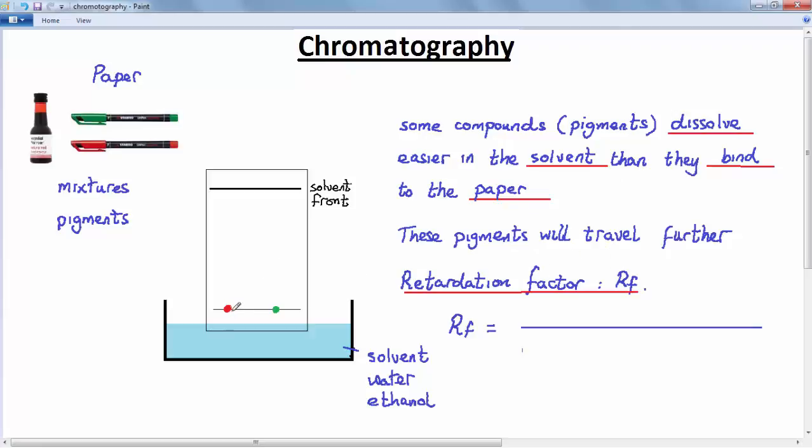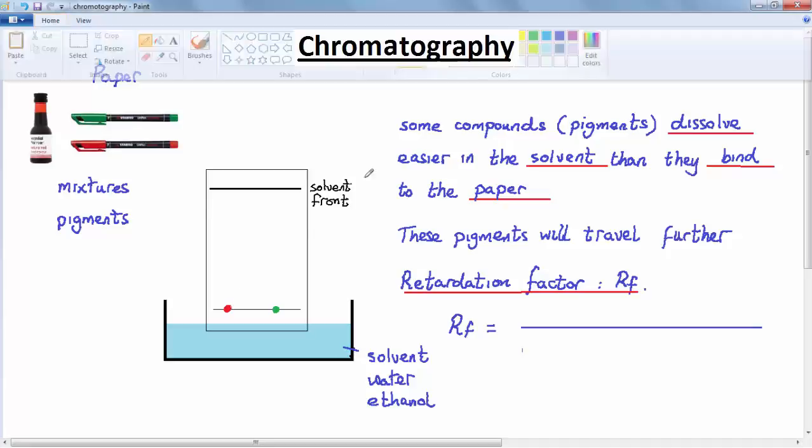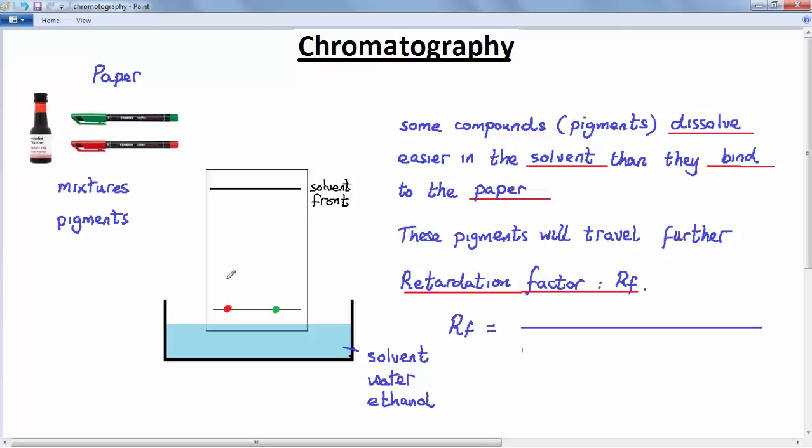For example, in the case of the red ink, what will happen is there will be some sort of magenta-like pigment here, and then further up you'll find there's a yellow pigment, whereas in the case of the green ink you might find a cyan-type pigment here, and then a bit further up a yellow pigment.